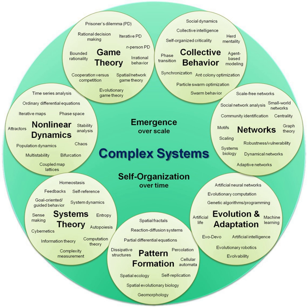A system can exhibit properties that produce behaviors which are distinct from the properties and behaviors of its parts. These system-wide or global properties and behaviors are characteristics of how the system interacts with or appears to its environment, or of how its parts behave in response to external stimuli. The notion of behavior implies that the study of systems is also concerned with processes that take place over time or, in mathematics, some other phase space parameterization. Because of their broad interdisciplinary applicability, systems concepts play a central role in complex systems.